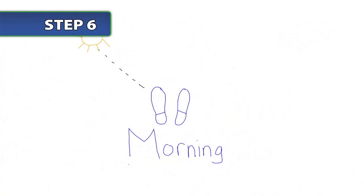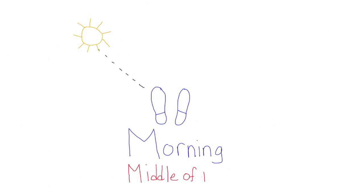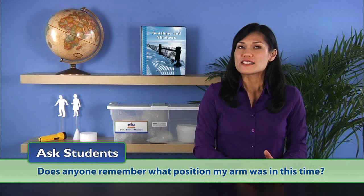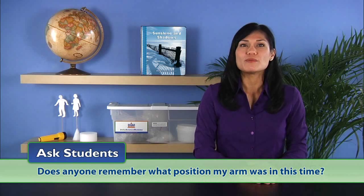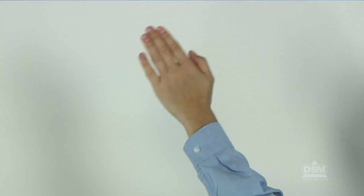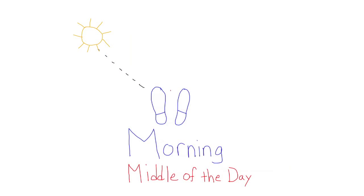Back in the classroom, write 'middle of the day' in red under the header 'morning.' Point to the drawing you created that morning and tell the students you are going to show the sun's place in the sky when it is in the middle of the day. Ask students if anyone remembers what position your arm was in this time. Move your arm until it is positioned at the correct angle, then draw a dotted line from the feet to the place that represents the correct position of the sun in the sky and add another sun to your picture. To conclude Session 2, leave the drawing for use in Session 3.